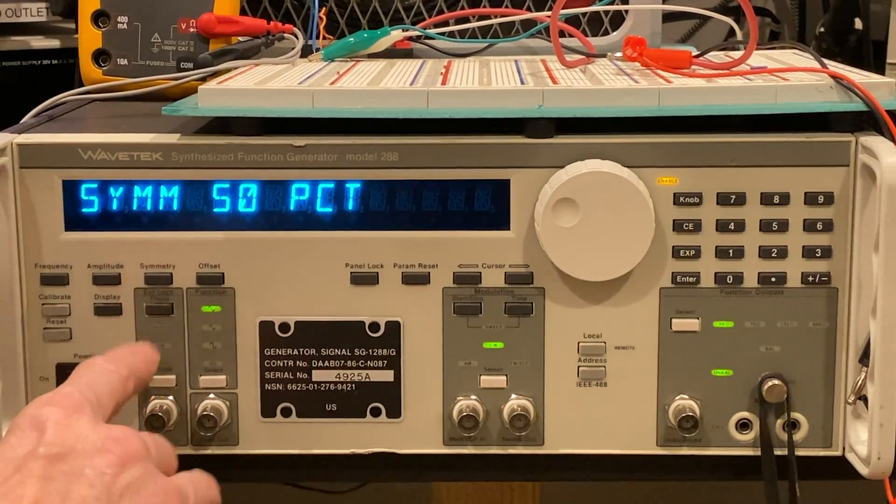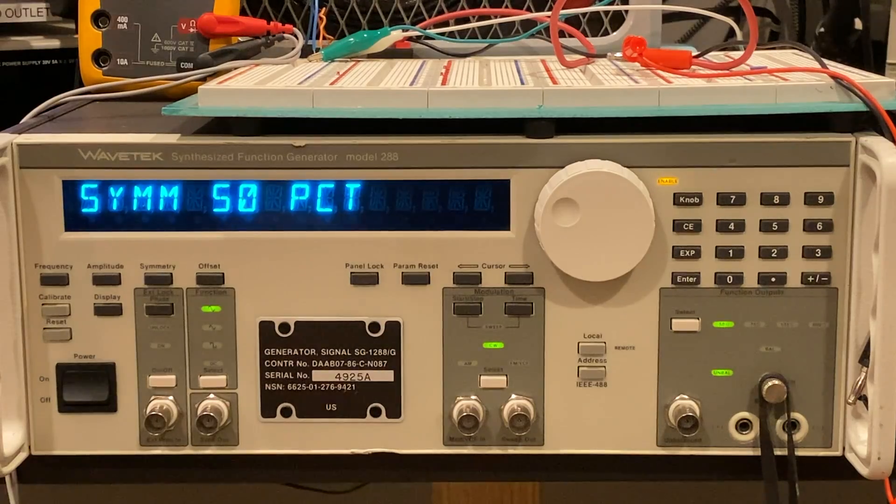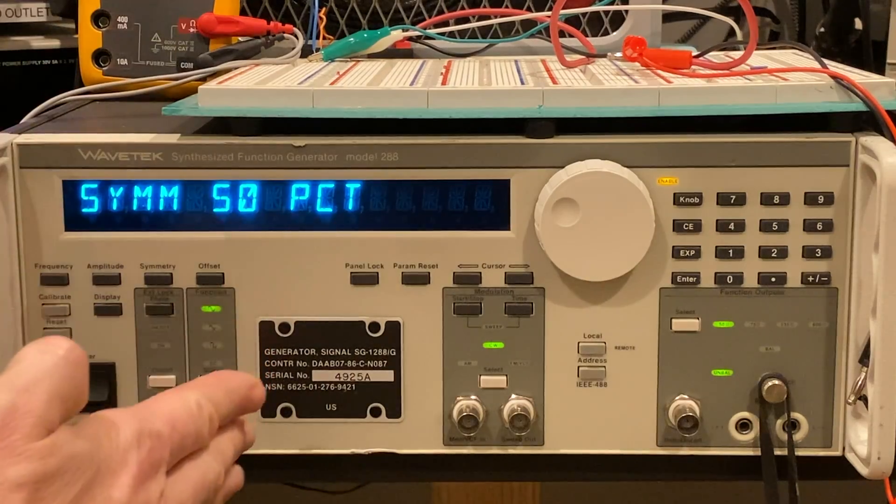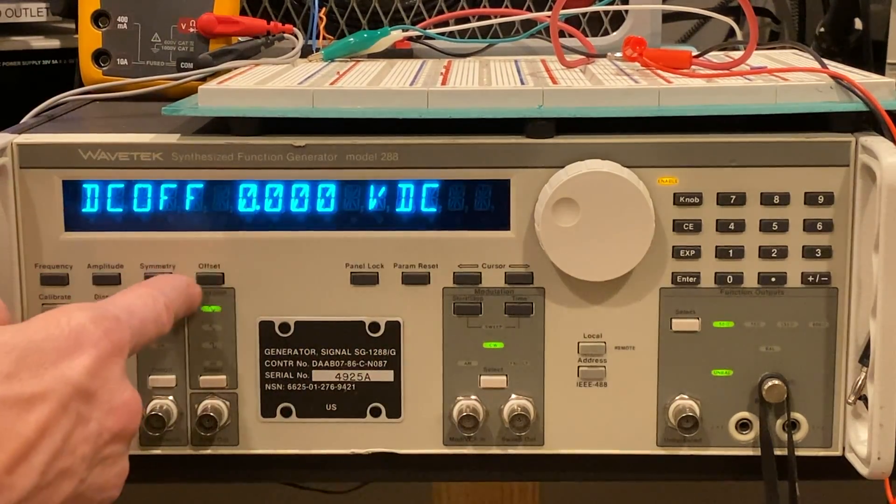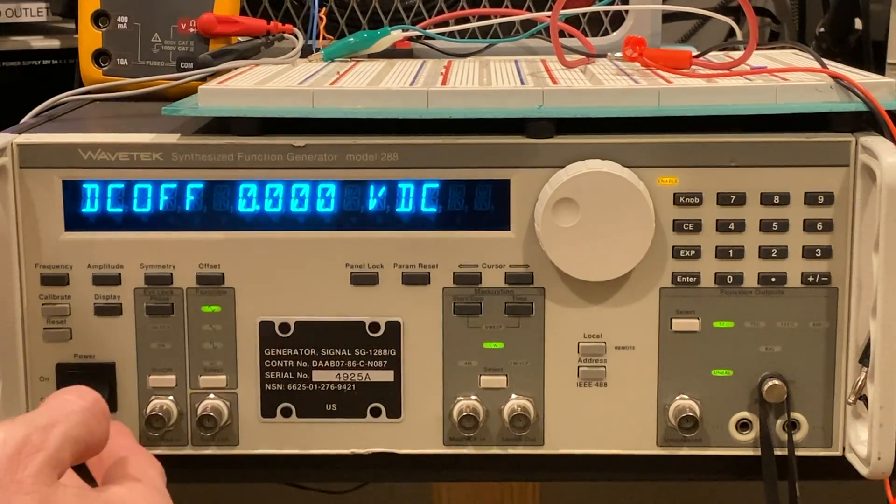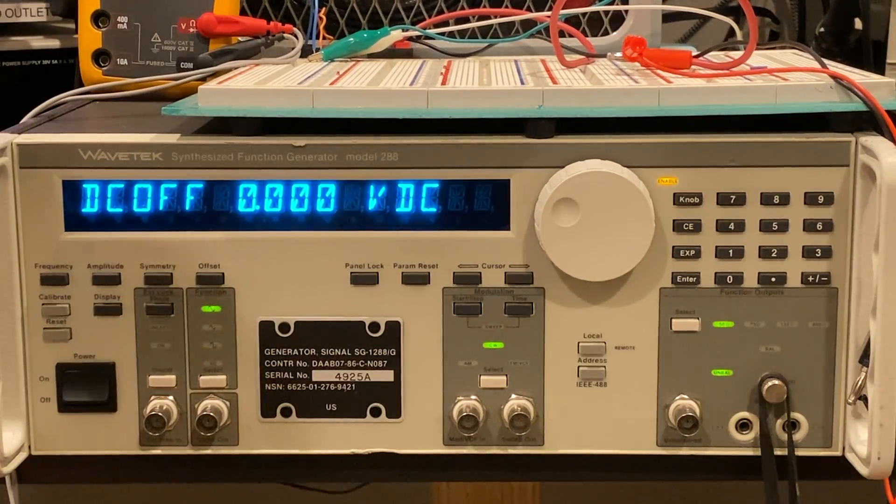Symmetry. This has a symmetry that goes 0.5 to 0.95 but the baseline is right in the center as it should be, 50 percent. And of course there's an offset value for DC offset as well, we'll talk about that just a little bit.